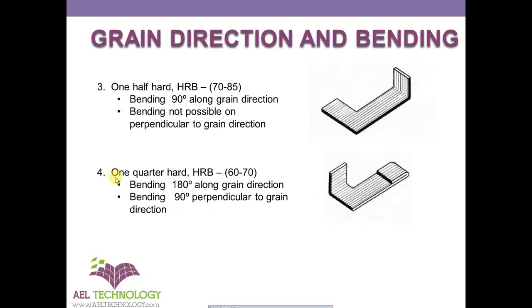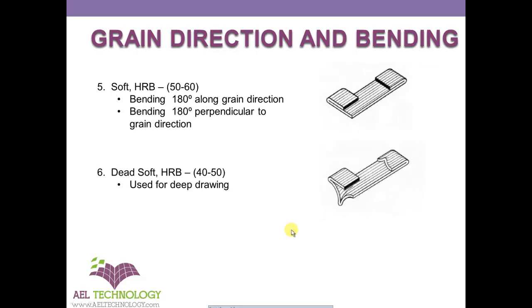In one quarter hard, whose HRB is between 60 and 70, we can always create a hem here, but you cannot go beyond 90 degrees.